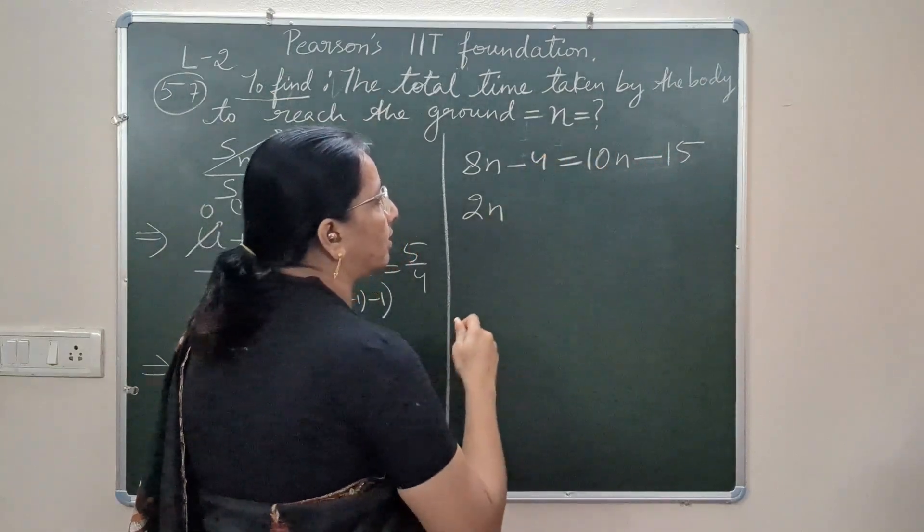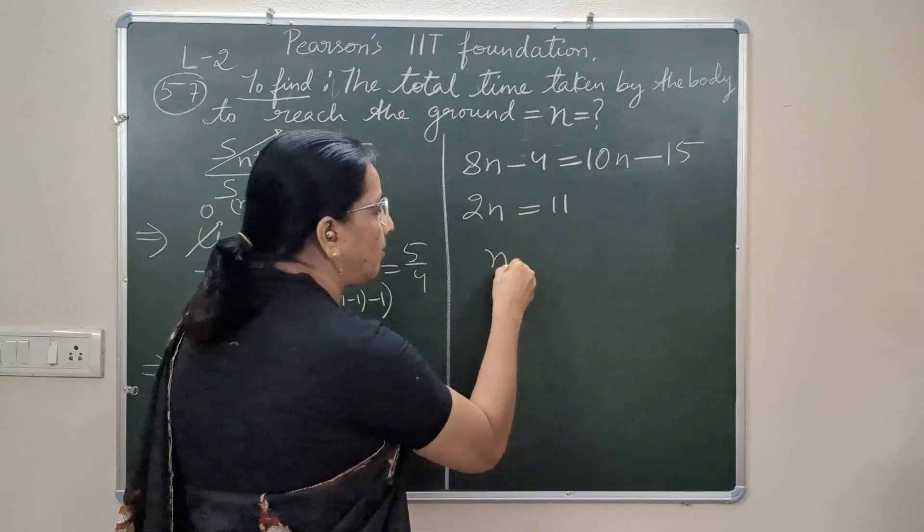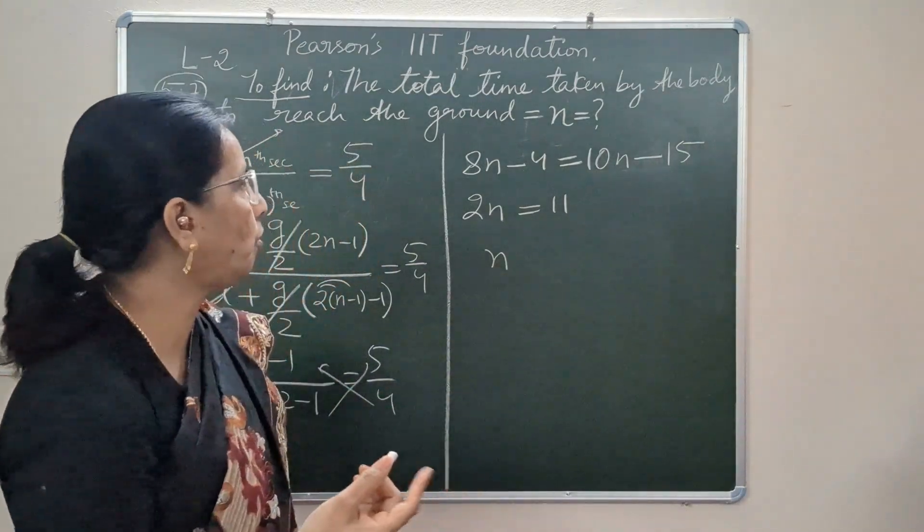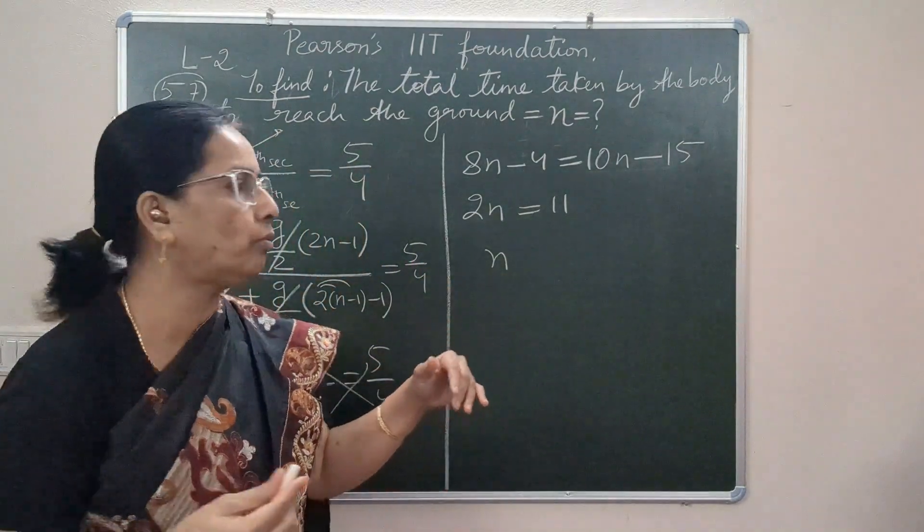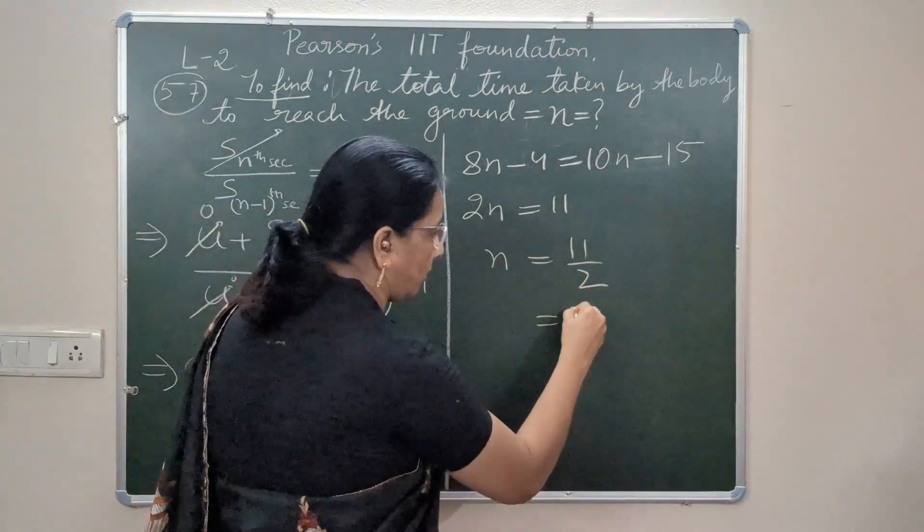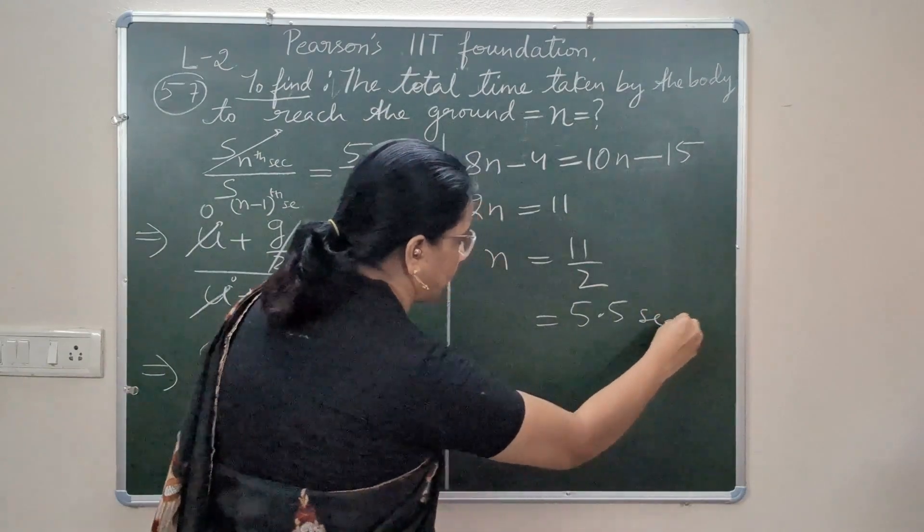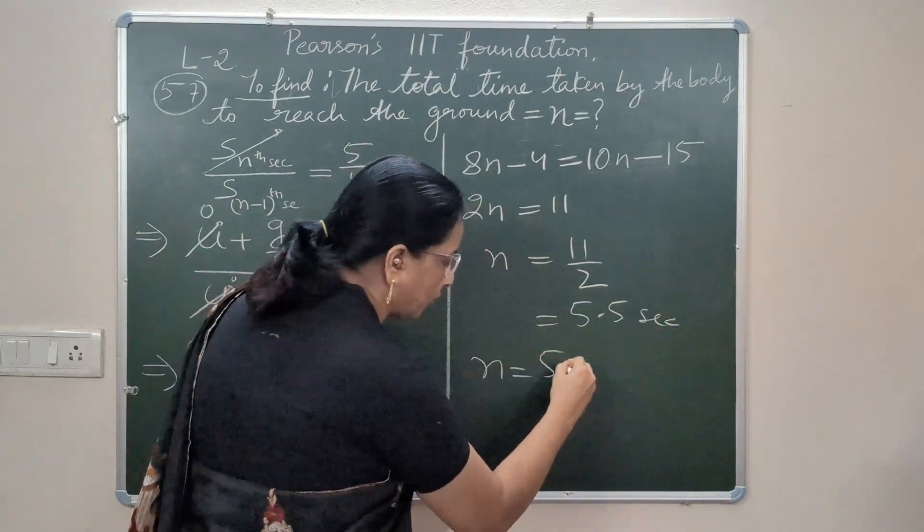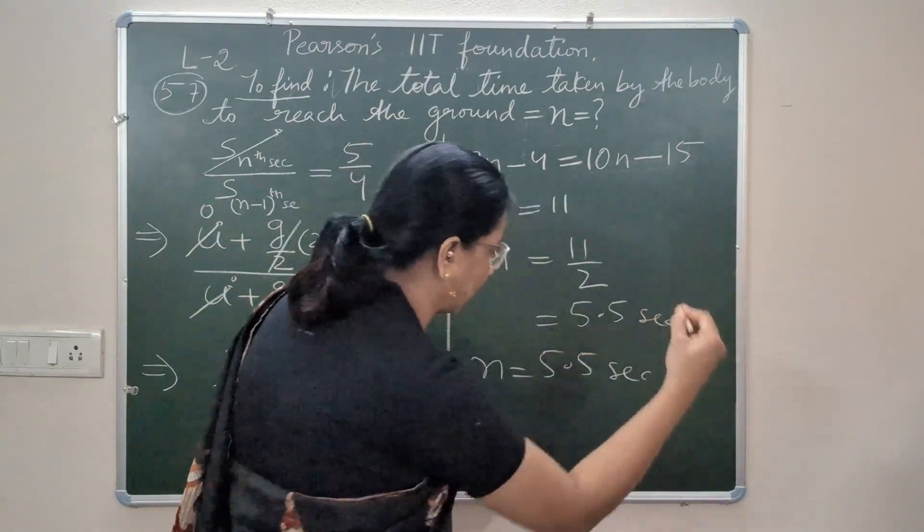So time taken by the stone or that body falling to reach the ground is 11 by 2, which is 5.5 seconds.